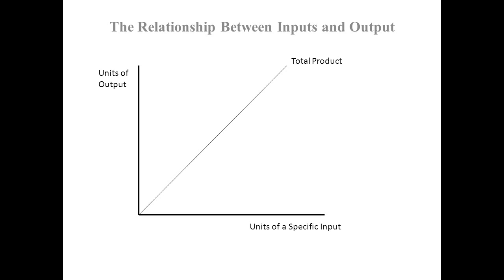The size of the warehouse will remain constant, the number of forklifts will remain constant, the amount of tools, the available workspace — all of that remains constant, and we're only changing this one specific type of labor. It's obvious that when we increase this specific input, the amount of output will also go up, and this leads to a positively sloped total product curve. That total product curve is our production function.